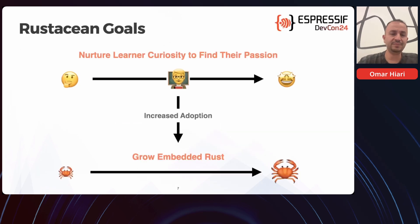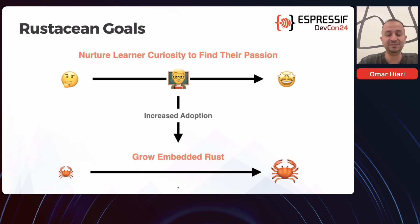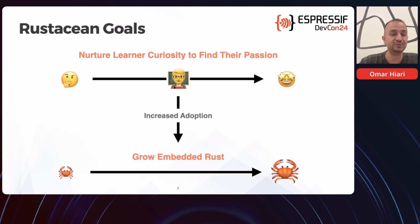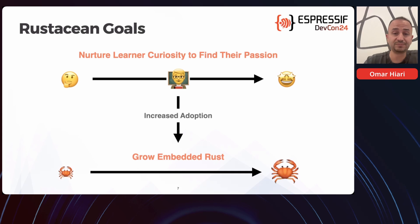Starting with embedded learning: we as educators would ideally want students that come into a certain field to have some level of curiosity about this field, and our duty is to nurture this curiosity to help them find their passion. Along the lines of embedded Rust, given that it's also an open source project, if the passion that these learners find would be in embedded Rust, it would help towards increasing adoption and help the project grow.